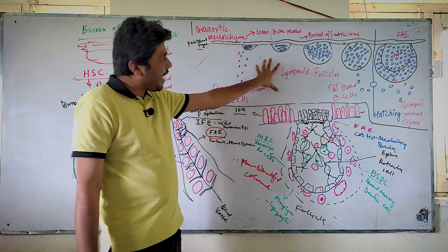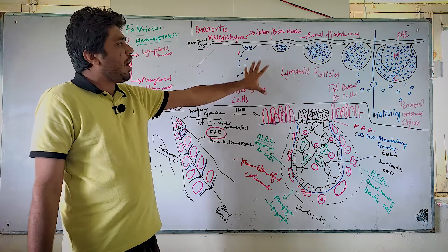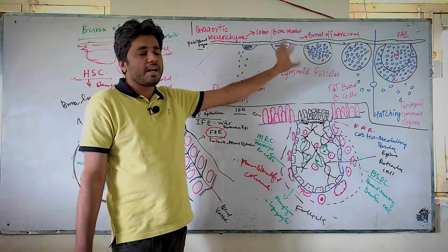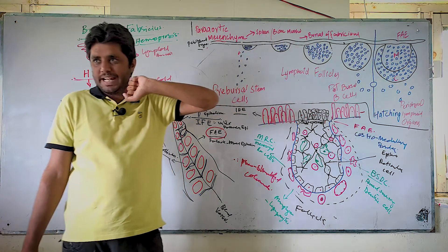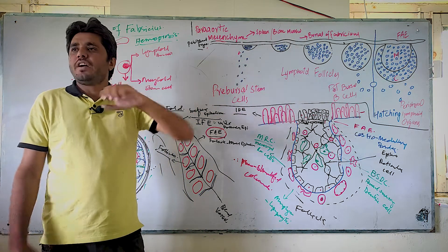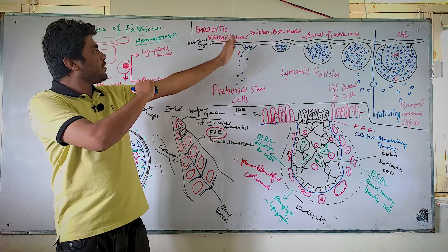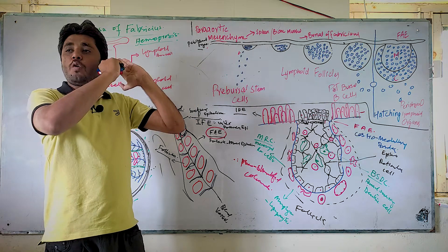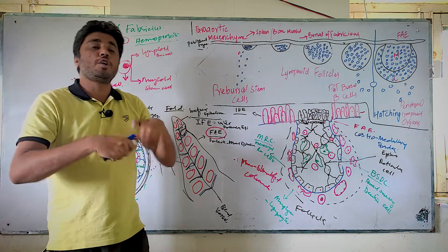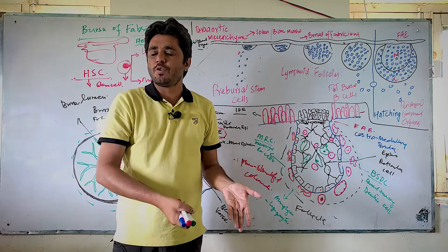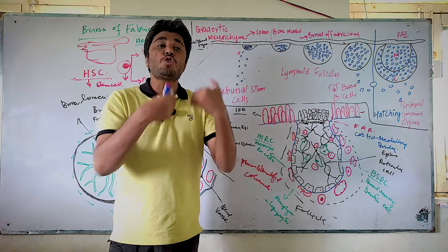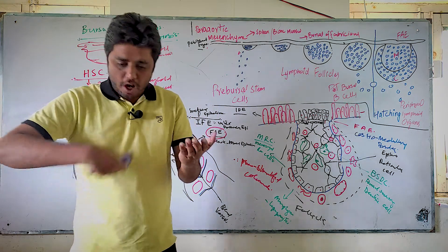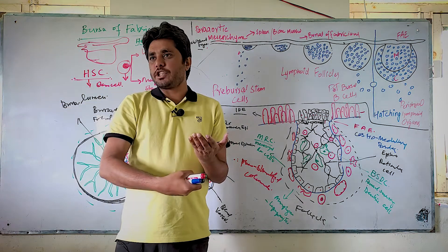This diagram is actually telling you how the bursa develops and how these cells come into different organs. In mammalian species, in the early stages, we have para-mesenchyme or York sac. Then cells move, after differentiation, into the liver, into the spleen, and later on into the bone marrow. This is how cells in the embryo travel in mammalian species.